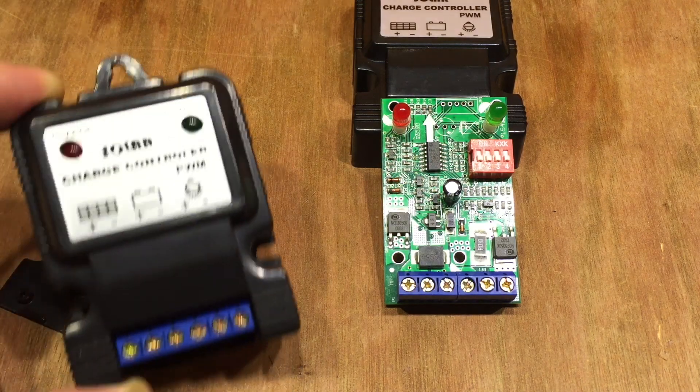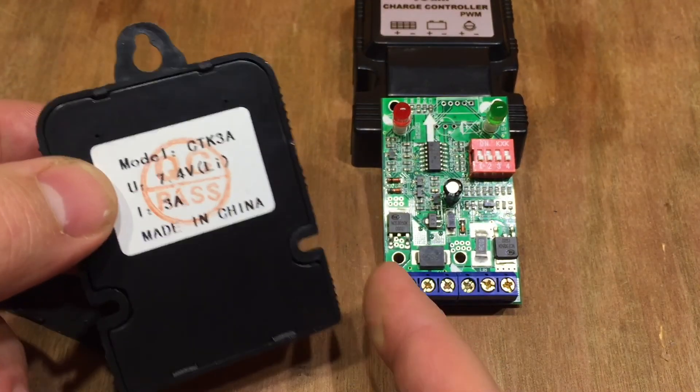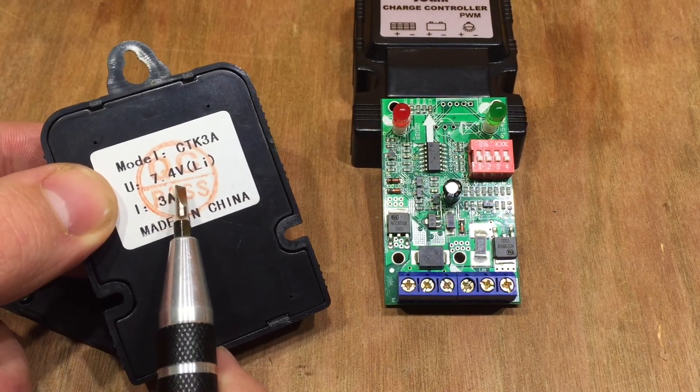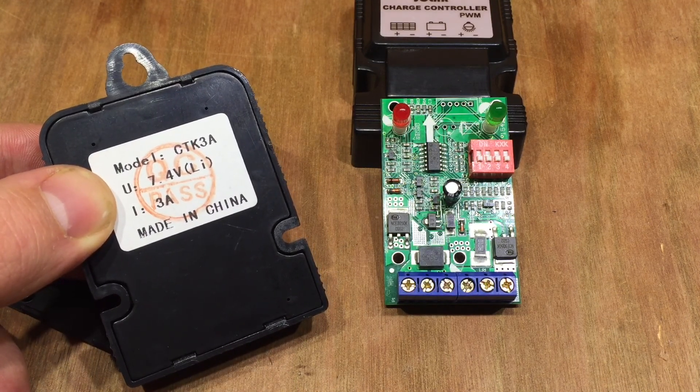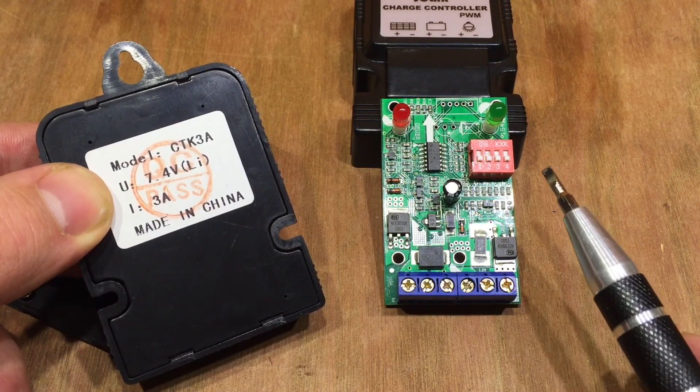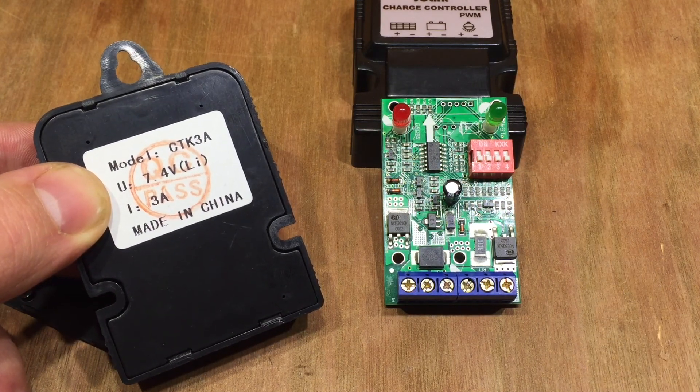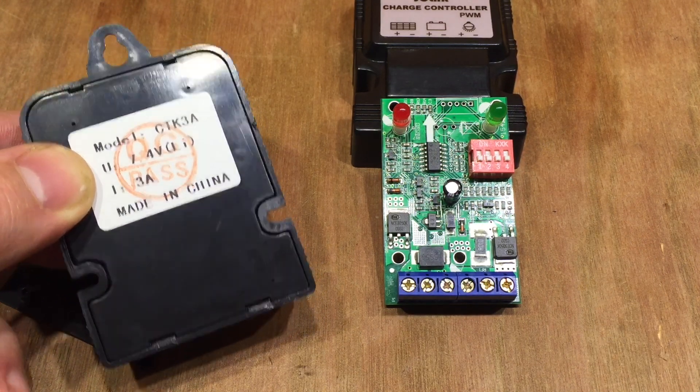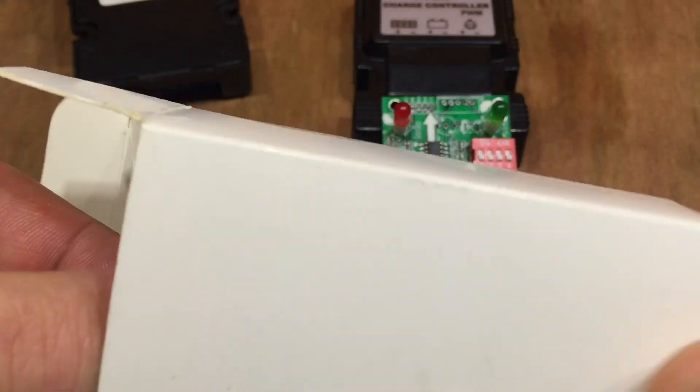So I went out and bought another one which looked absolutely identical, but the information on the back says this is a 7.4V lithium-ion solar charge controller. So I wondered if those dip switches would be different. But before I even opened this case, looking inside the box,